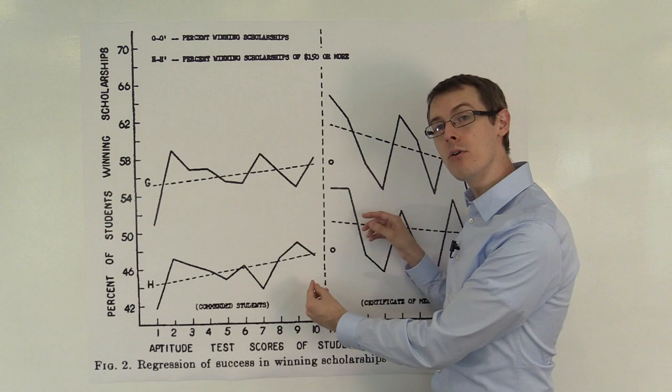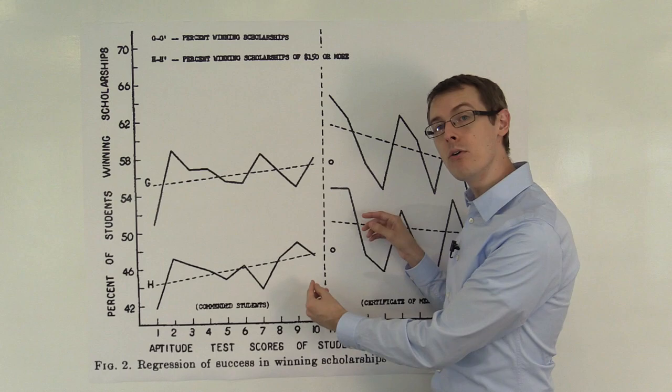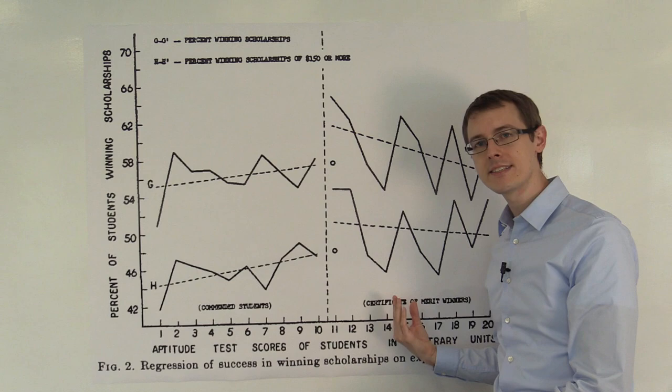And any difference in average outcomes between these two groups is solely attributed to the fact that the people on the right-hand side of the cutoff got a certificate of merit and the people on the left didn't.